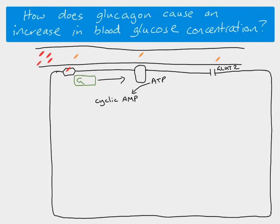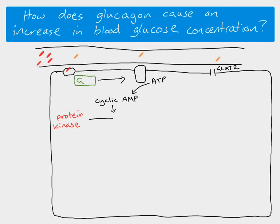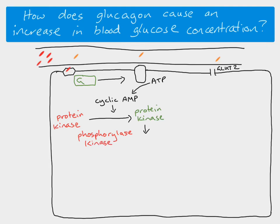Cyclic AMP then activates a protein kinase enzyme — the red colour represents it being inactive, and cyclic AMP activates it. This activated protein kinase then causes another enzyme called phosphorylase kinase to become activated, giving us an activated phosphorylase kinase.